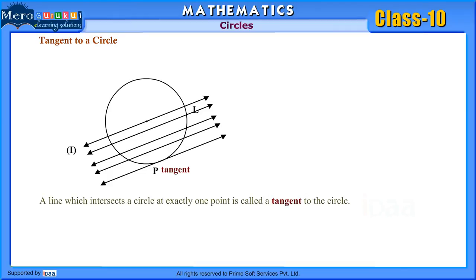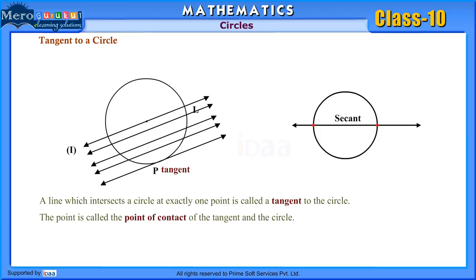A line which intersects a circle at exactly one point is called a tangent to the circle. The point is called the point of contact of the tangent and the circle. A line which intersects a circle in two distinct points is called a secant.